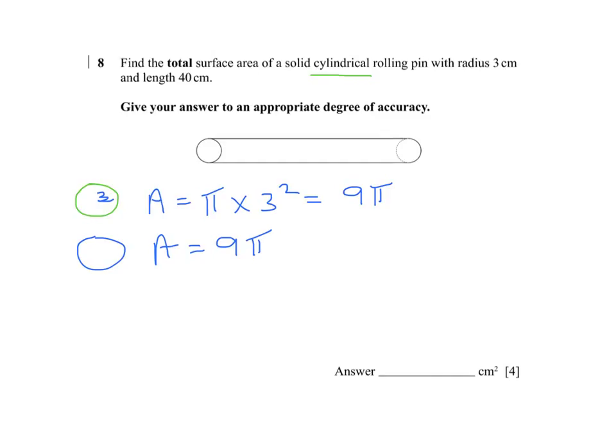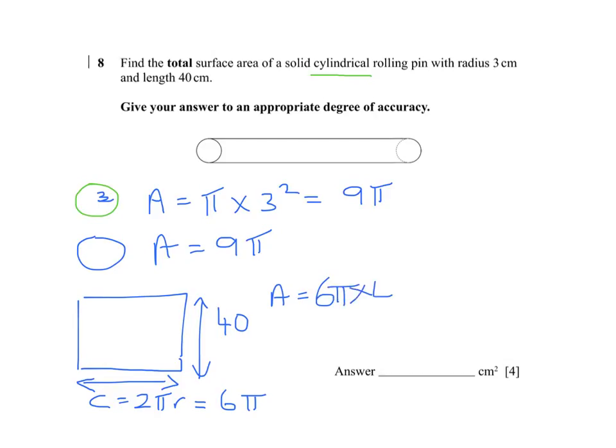The curved area can then be unfolded and that gives us a rectangle which will have the length of 40. The width is the circumference of a circle, so that is 2pi r. In this case that is 2 times pi times 3, which is 6pi. So the curved surface area will be 6pi times 40, which is 240pi.